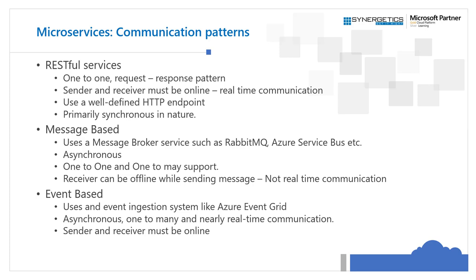Whenever some event happens in the application, we need to send a notification to another service to trigger or invoke it. It uses event ingestion systems like Azure Event Grid or AWS Event Bridge for routing these events to subscribers. It is also asynchronous in nature and can be used to send a single event to many subscribers. It is real-time communication because it does not store and forward messages — whenever the event is generated by the producer, it is immediately routed to subscribers. The sender and receiver must be online since no information about past events is stored.